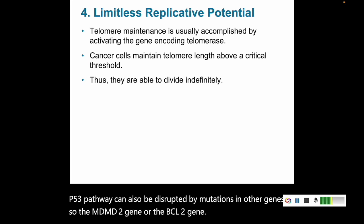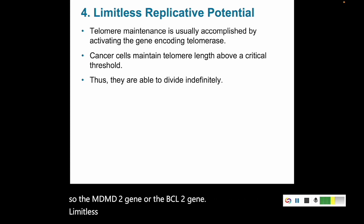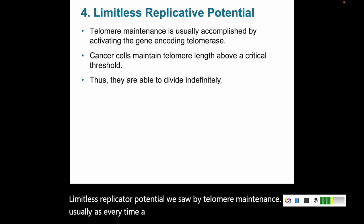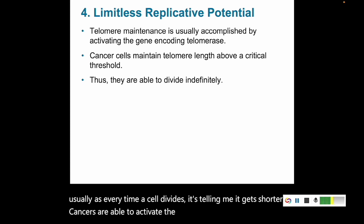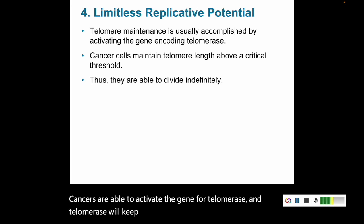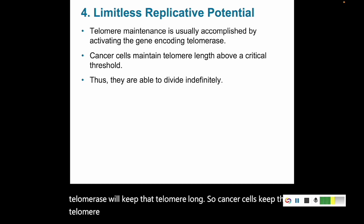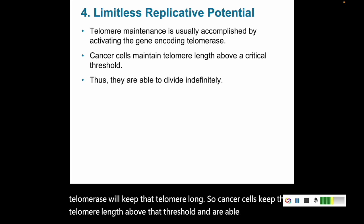Limitless replicative potential is achieved through telomere maintenance. Usually every time a cell divides, telomeres get shorter. Cancers are able to activate the gene for telomerase, and telomerase will keep that telomere long. So cancer cells keep their telomere length above that threshold and are able to indefinitely divide.